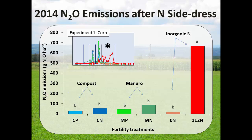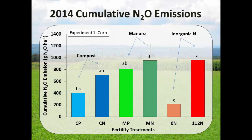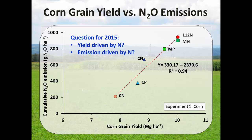This figure shows nitrous oxide emissions after sidedress nitrogen application. We can see very low emissions in our organic plots and zero in the control, but high emissions with inorganic nitrogen. Looking at cumulative nitrous oxide emissions, high rates of inorganic nitrogen and N-based manure show the highest emissions. There is a trend of nitrous oxide reducing as we go from N-based manure to P-based compost. If you shift from N-based manure to P-based manure, you're losing four to five percent yield but your nitrous oxide emissions will reduce by 29%. If you shift from N-based compost to P-based compost, you're losing around three percent yield but nitrous oxide emissions reduce by 43%.